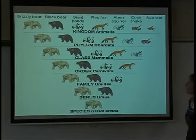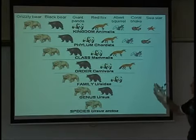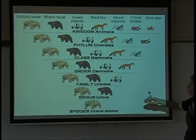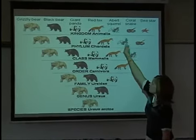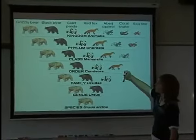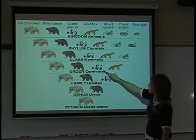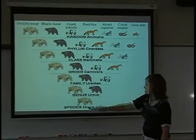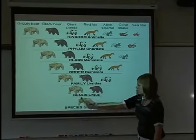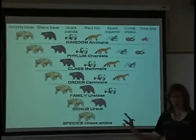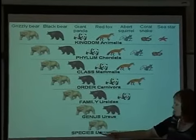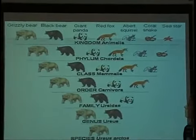Here's an illustration showing how we go from kingdom down to species using a brown bear as an example. Starting with animal, you have all these different animals, and as you go down through the different groupings, you end up with just one species. Certain things come into play that eliminate other species so you end up with just one in the species category. That concludes our biological classification.